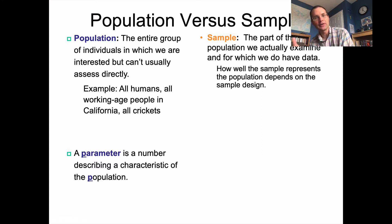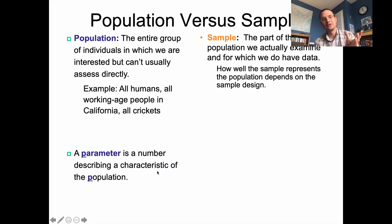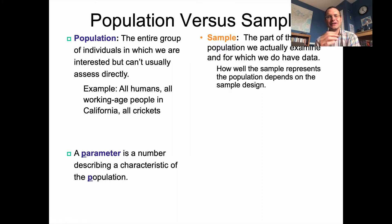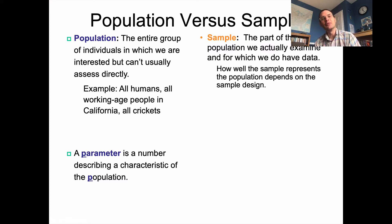A sample is the part of the population we actually examine and for which we do have data. With the vaccination numbers in Alberta, since the government is keeping records and knows how many people live in the province, they're able to come up with a specific parameter. But let's say you weren't the government and wanted to make a guess — you might go downtown Calgary and ask the first 20 people you see on the street whether they've been vaccinated, and from that draw conclusions about the entire population of Alberta.